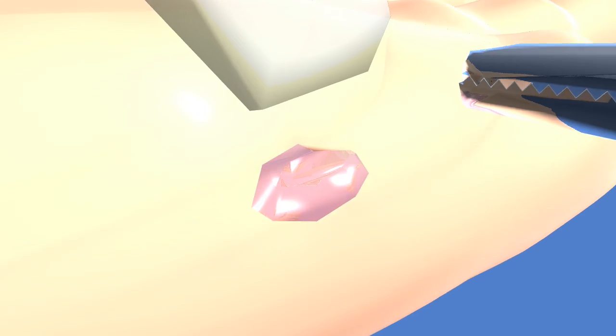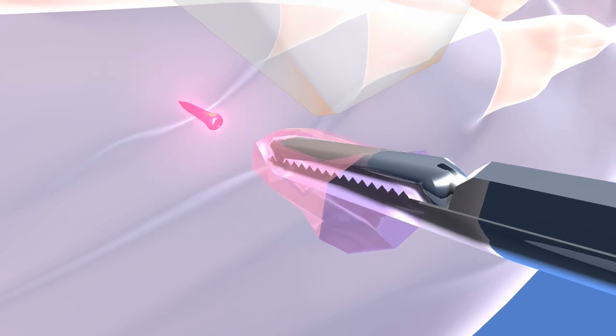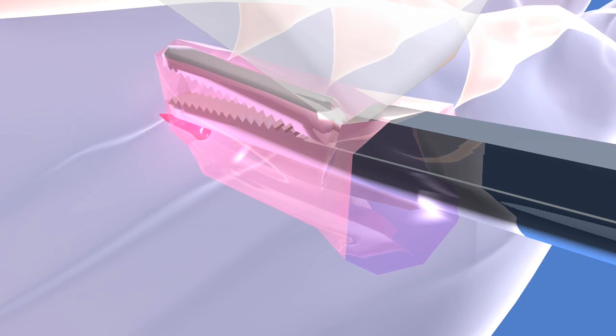To further illustrate the important points, this minimally invasive technique is performed through incisions as small as 4 to 5 millimeters, particularly with the Hartmann alligator forceps seen in this animation.